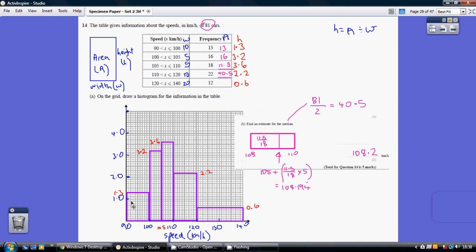Now each of these bars are rectangles, so obviously an area of a rectangle is the width, the base times the height, so base times height equals the area. So the frequency is the area. Now these distances for the speed from 90 to 100 and 100 to 105 and so on, those form the bases of the rectangles.